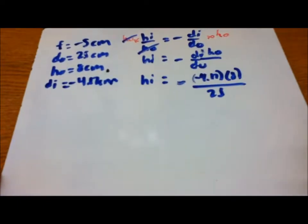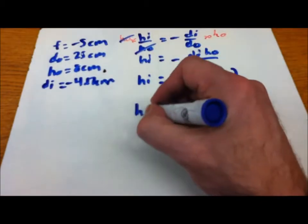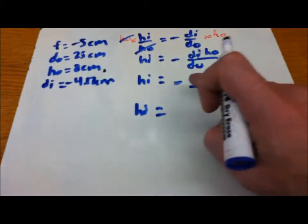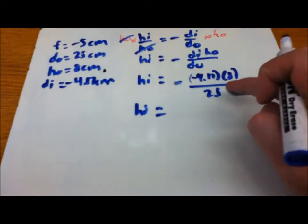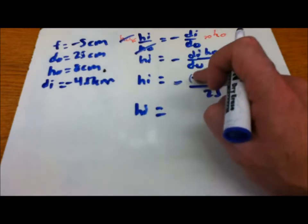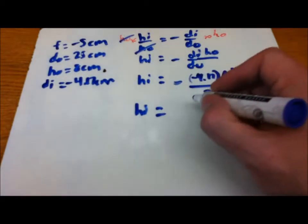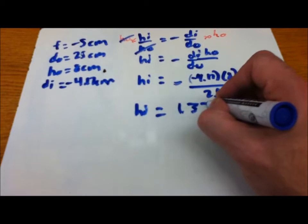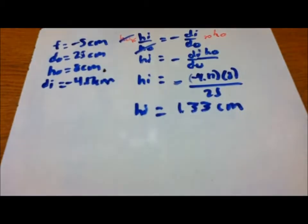Okay, let's shift that a little bit. Hi, if you just multiply 4.17 times 8 divided by 25 and make the two negatives become a positive value, put all that into your calculator, and it will spit out 1.33 centimeters, and that is the height of the image.